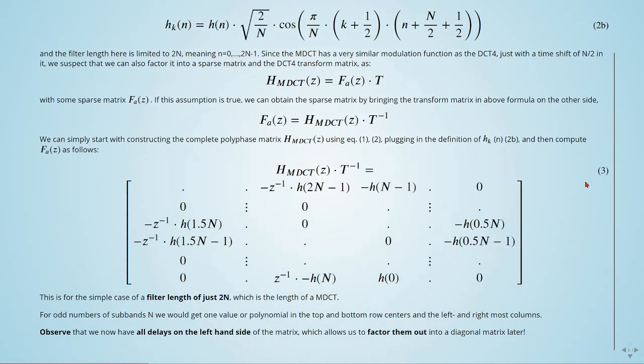This is for the simple case of a filter length of just 2 times capital N, which is the length of a MDCT. For odd numbers of subbands N, we will get one value or polynomial in the top and bottom row centers in the left and right most columns.